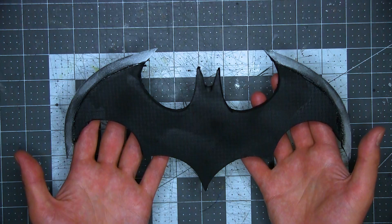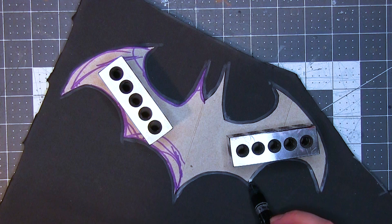First, I made a batarang. I'm going to blow through this process because I covered it in another video. Link below. But essentially, I just drew it, traced it onto some scrap foam, cut it out, and painted it.